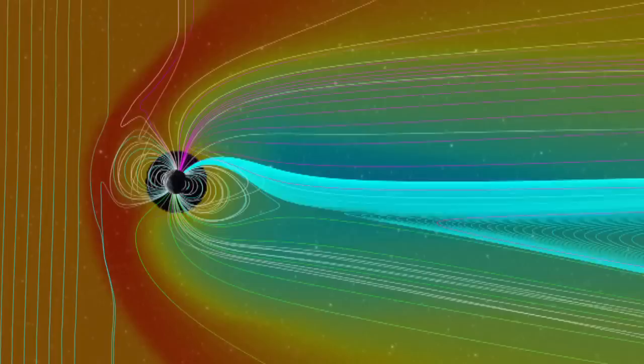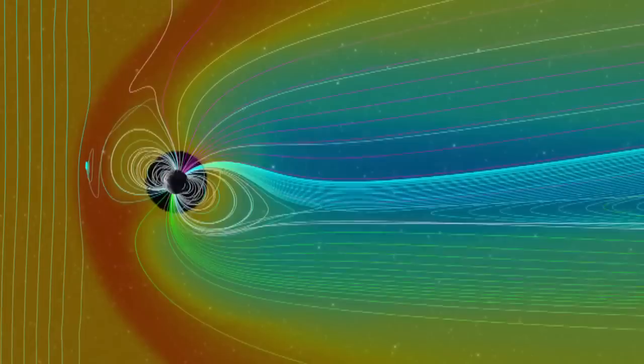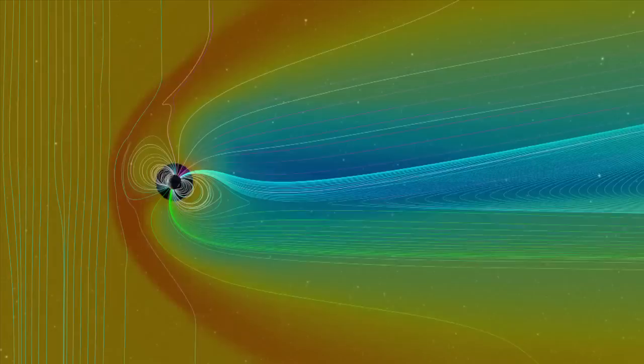But close to Earth, the magnetic field is largely unchanged. Earth is protected from the intense solar event.